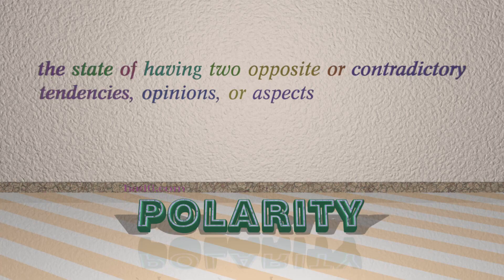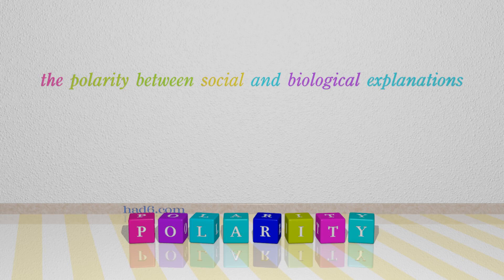Number 6: Polarity. Which means the state of having two opposite or contradictory tendencies, opinions, or aspects. For example: The polarity between social and biological explanations.